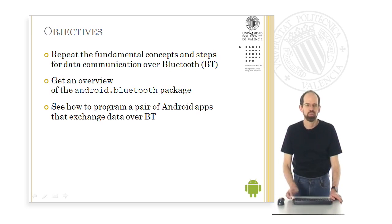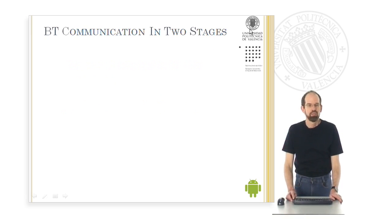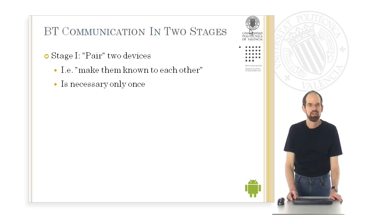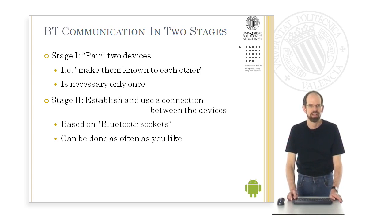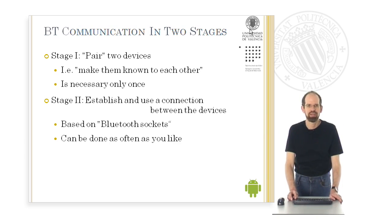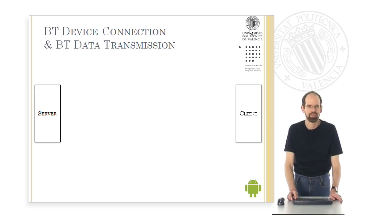Some of this talk will be a repetition of the previous talk. Bluetooth communication proceeds in two stages. The first stage is to pair two devices — that is, to make them known to each other — and this is necessary only once. Stage two is to establish and use a connection between the devices, which is based on Bluetooth sockets and can be done as often as you like.